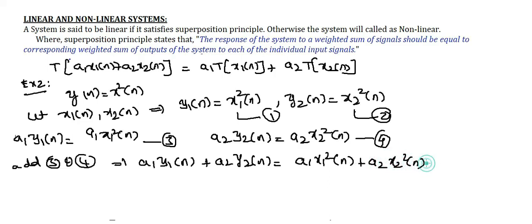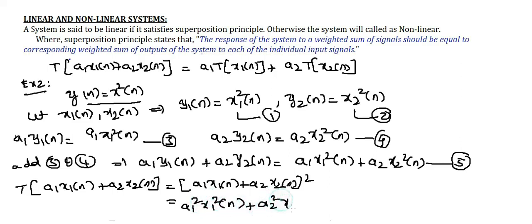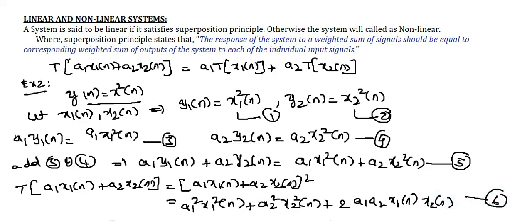To find the overall response, T of [a1·x1(n) + a2·x2(n)] means substituting the weighted sum into y(n) = x²(n), giving [a1·x1(n) + a2·x2(n)]². Expanding using (a+b)² = a² + b² + 2ab, we get a1²·x1²(n) + a2²·x2²(n) + 2·a1·a2·x1(n)·x2(n) — equation 6. Comparing equations 5 and 6, both are not equal, so it does not satisfy the superposition principle; hence the system is non-linear.